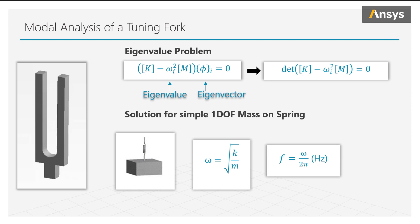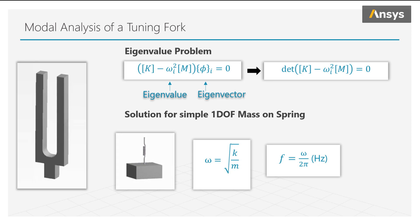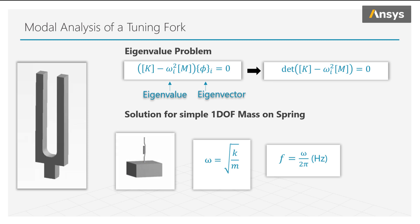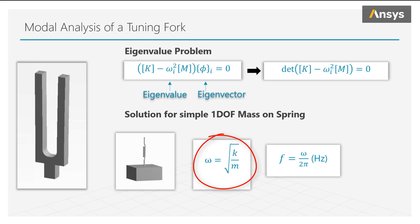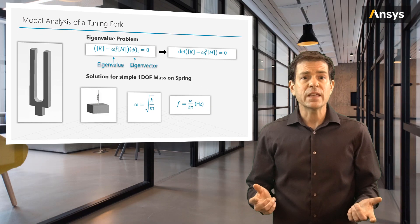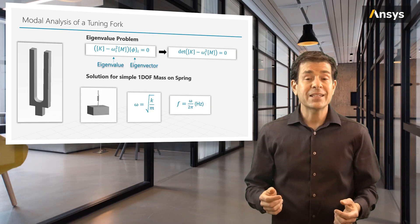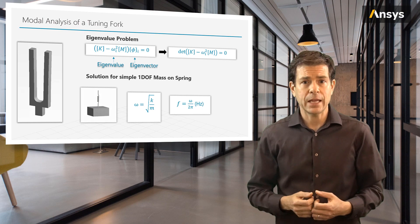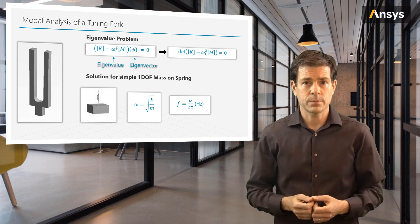If we solve this equation on a single degree of freedom system, like a mass on a spring that can oscillate in one direction, the solution can simply be solved using algebra, giving the natural frequency as the square root of the stiffness k over the mass m. We can keep this equation in mind when thinking of more complex systems, as it can help us intuitively understand the expected behavior of the system.